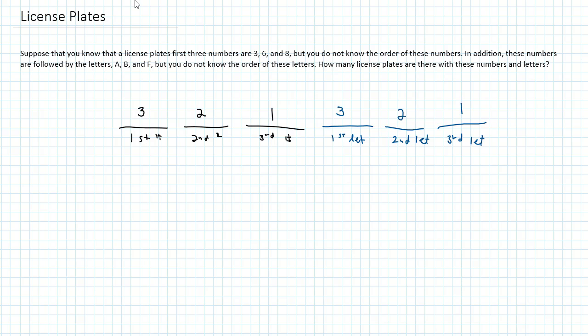If I multiply these all together, that would give me the total number of branches on this tree. And so 3 times 2 times 1 times 3 times 2 times 1, that's 36. So there are 36 possible plates.